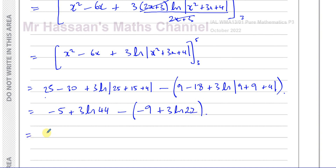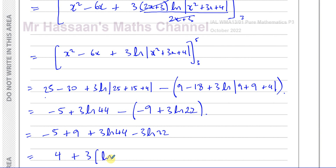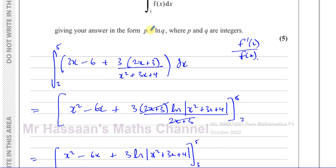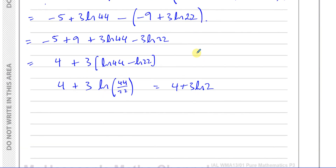Taking 3 out: we have 4 plus 3 times ln(44) minus ln(22). By the laws of logarithms we can write this as 4 plus 3 times ln(44 over 22), which is 4 plus 3 ln(2). Now they want the answer in the form p plus ln(q), with no coefficient in front of the ln. Using the power law, 3 ln(2) equals ln(2 cubed), so the final answer is 4 plus ln(8).